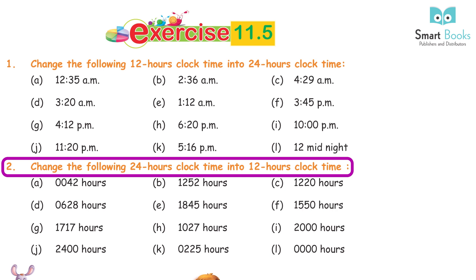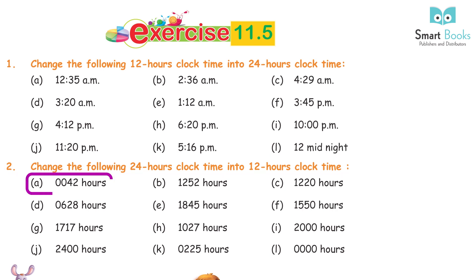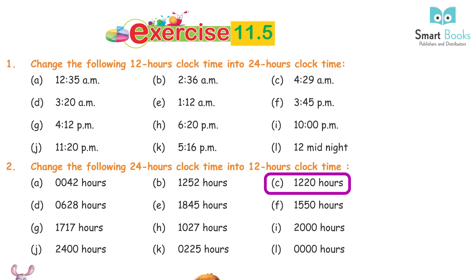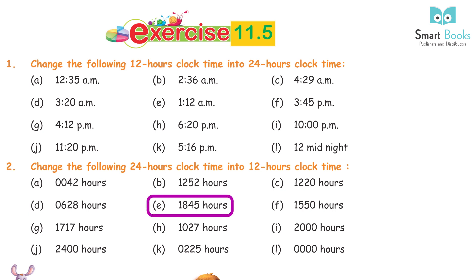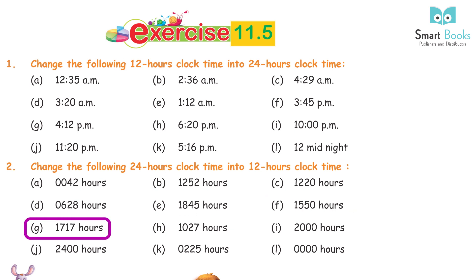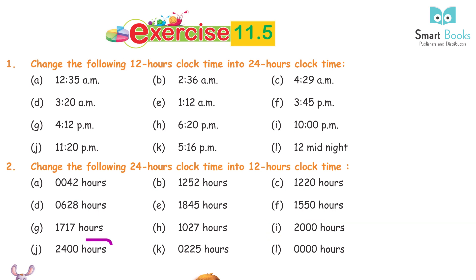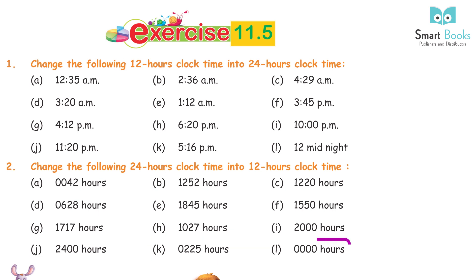Question 2: Change the following 24-hour clock time into 12-hour clock time. A. 0042 hours = 12:42 AM. B. 12:52 hours = 12:52 PM. C. 12:20 hours = 12:20 PM. D. 06:28 hours = 6:28 AM. E. 18:45 hours = 6:45 PM. F. 15:50 hours = 3:50 PM. G. 17:17 hours = 5:17 PM. H. 10:27 hours = 10:27 AM. I. 2000 hours = 8 PM. J. 2400 hours = 12 midnight. K. 02:25 hours = 2:25 AM. L. 0000 hours = 12 midnight.